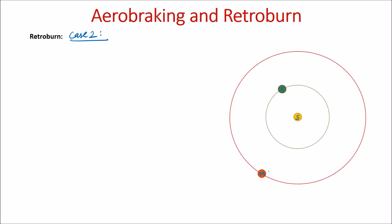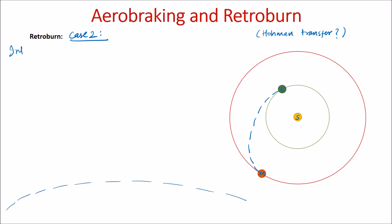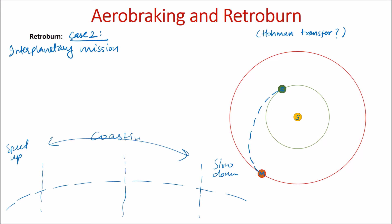Now let's look at case 2 for retro burn. Suppose this is the Sun, this is Earth, this is Mars, and you want to go from planet Earth to planet Mars. You would typically use a low energy orbit called a Hohmann transfer orbit. This orbit is basically divided into 3 phases and is mostly used for interplanetary missions or other space operations. The first phase is the speed-up phase, the last phase is the slow-down phase, and the middle one is the coasting phase.